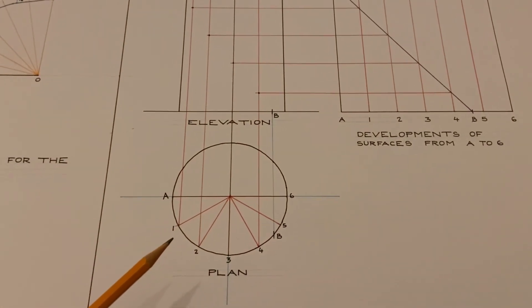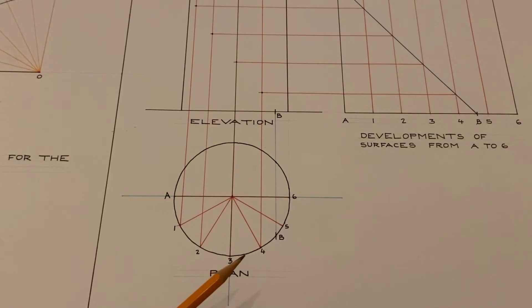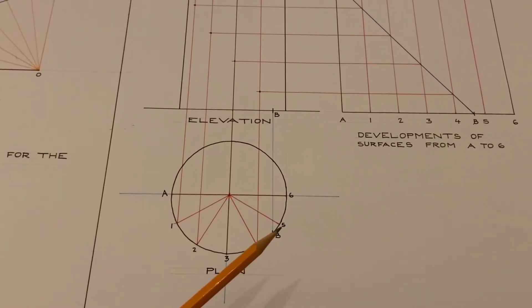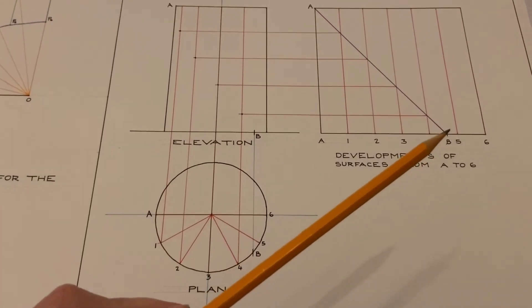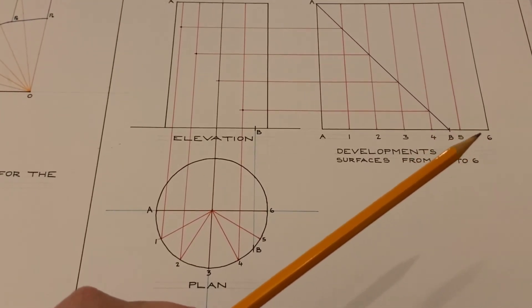So now we go back to our plan and we bring up 1, 2, 3 and 4 from plan. There is no need to bring up 5 because as we can see over here 5 and 6 are not cut by the helix.